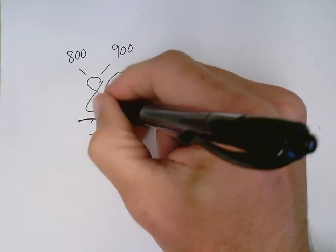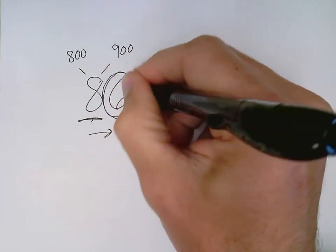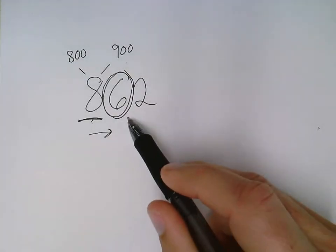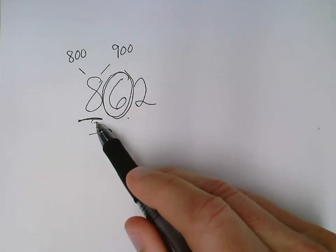I circle the tens place. I circle the digit next to it. The circle digit is the boss of the underlined digit. It tells the underlined digit what to do.